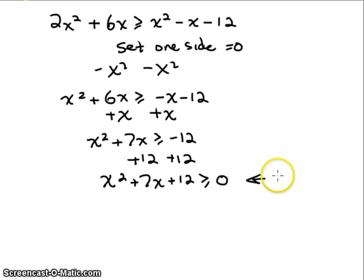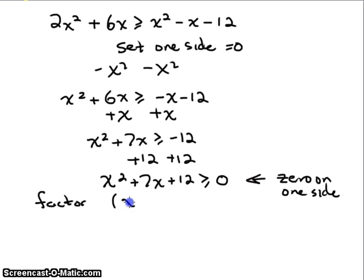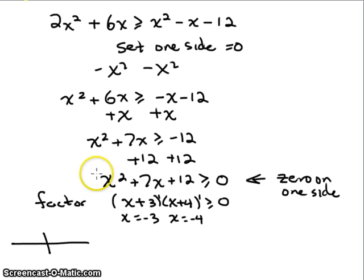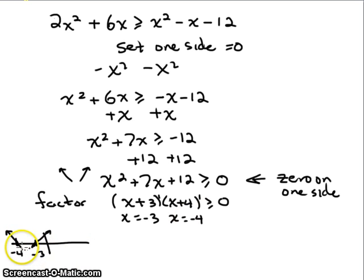We factor x² + 7x + 12 as (x + 3)(x + 4). We have zeros at x = -3 and x = -4, both with multiplicity one. This is even degree with a positive leading coefficient, so ends go up. Multiplicity one means the graph crosses the x-axis. Everything between x = -4 and x = -3 is negative; everything outside those points is positive; the zeros themselves equal zero.